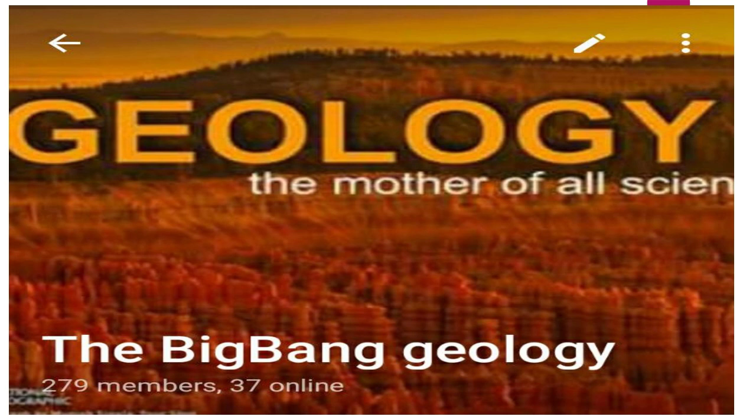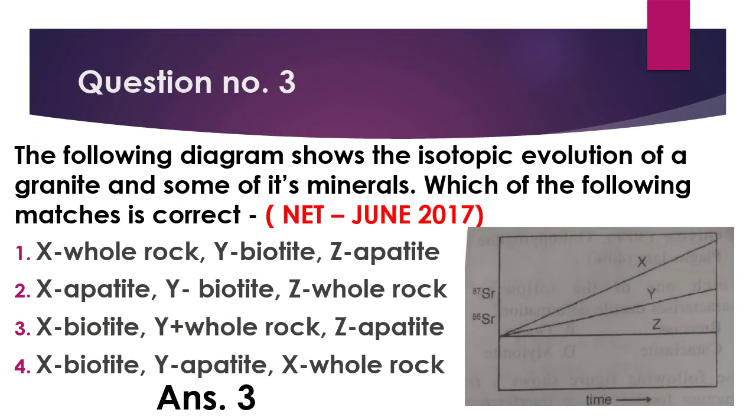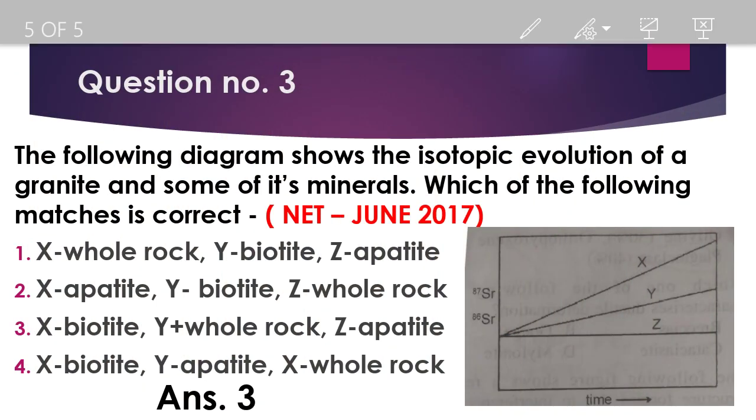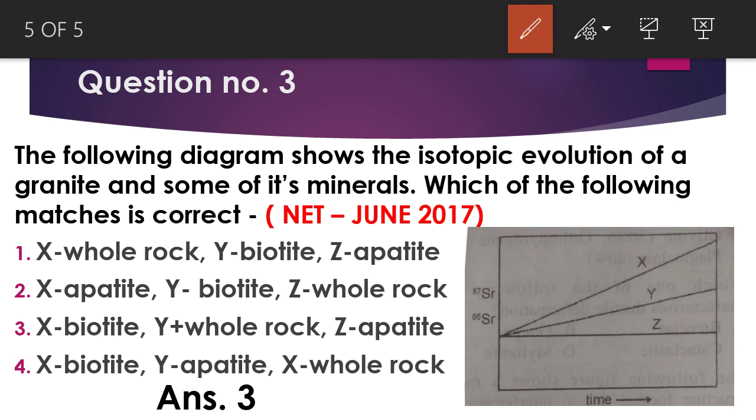Our third and last question: the following diagram shows the isotopic evolution of a granite and some of its minerals. Which of the following matches is correct? We have three minerals given: apatite, biotite, and whole rock.